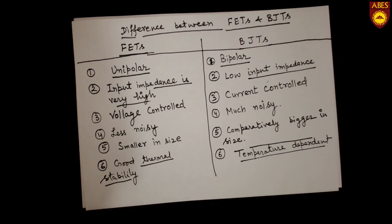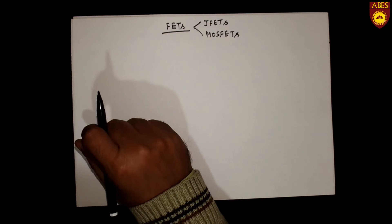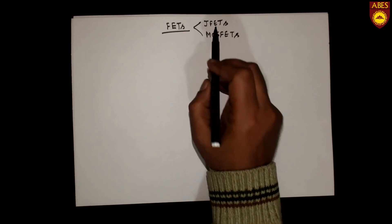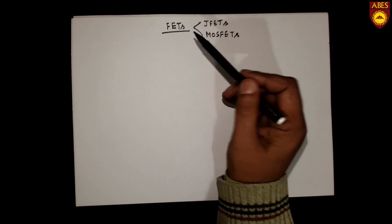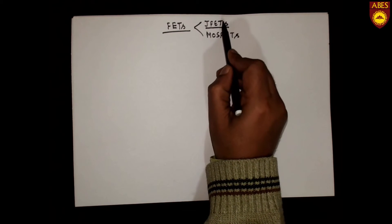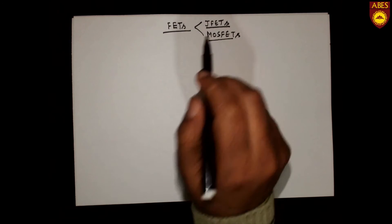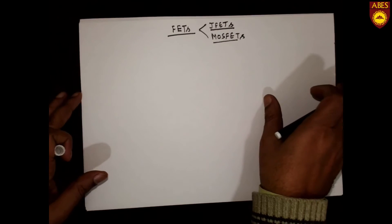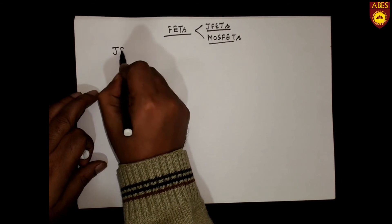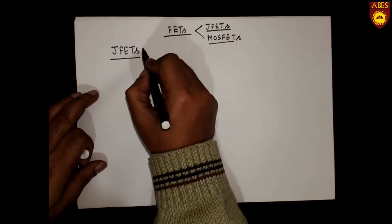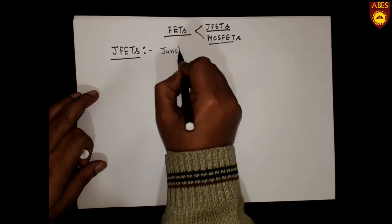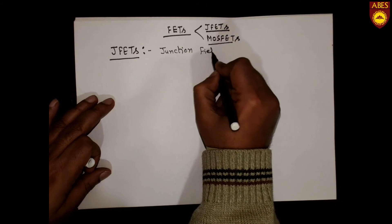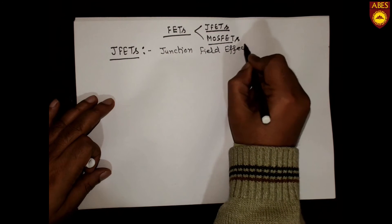In the next tutorial, we will talk about the constructional details of field effect transistors. As we discussed, FETs can be classified in two broad categories: JFETs and MOSFETs. Today, we will talk about the constructional details of JFETs — junction field effect transistors.